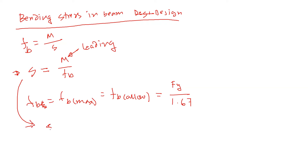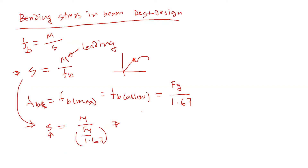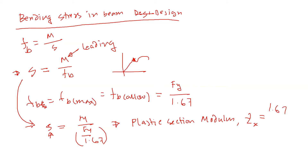So we find that S equals M divided by (Fy / 1.67). Since we are assuming the beam will go all the way to the yield point, instead of S (the elastic section modulus) we use Z — the plastic section modulus, expressed as Z as in Zebra. The formula becomes Z = 1.67 M divided by Fy.